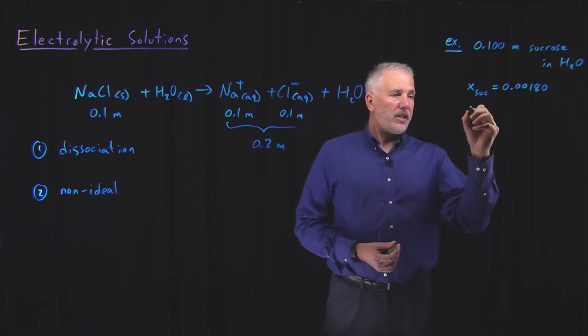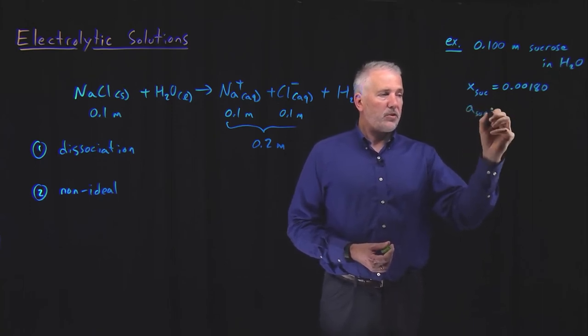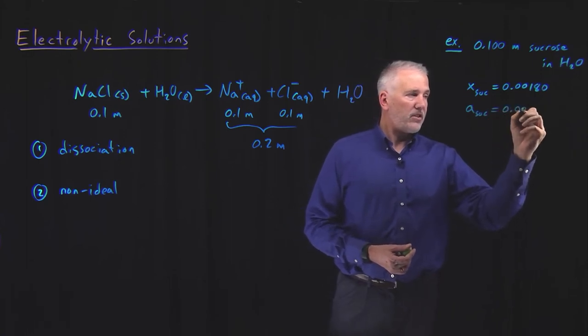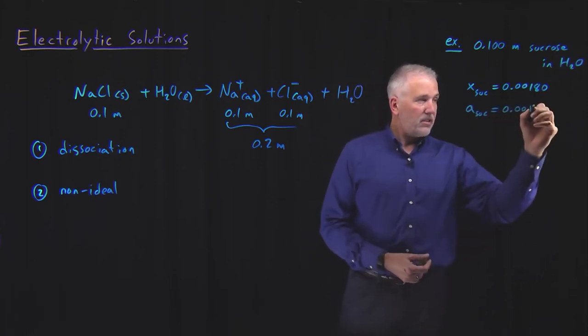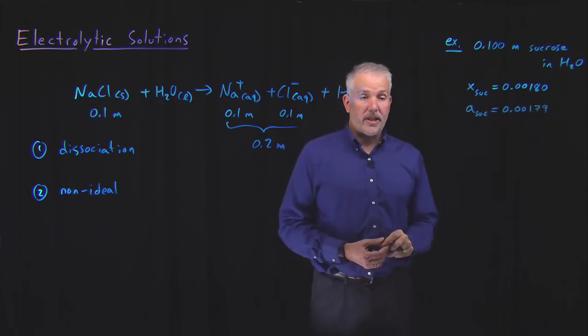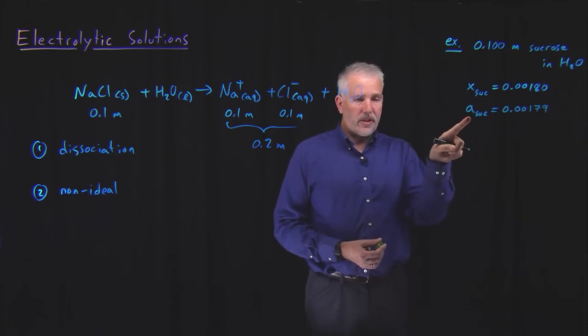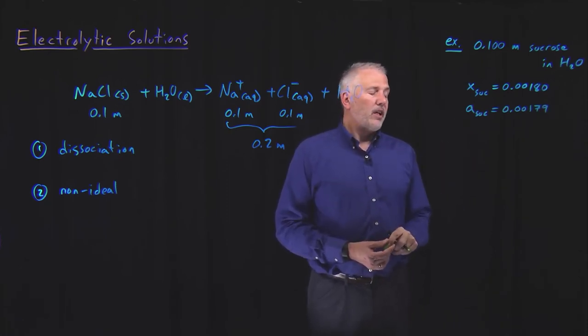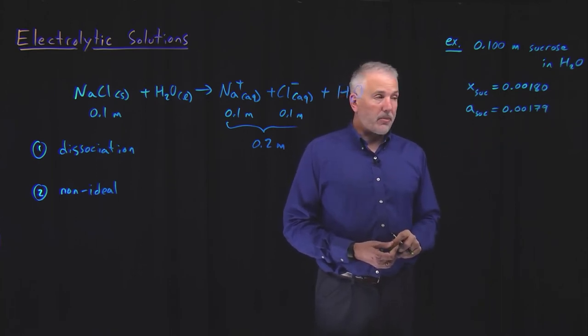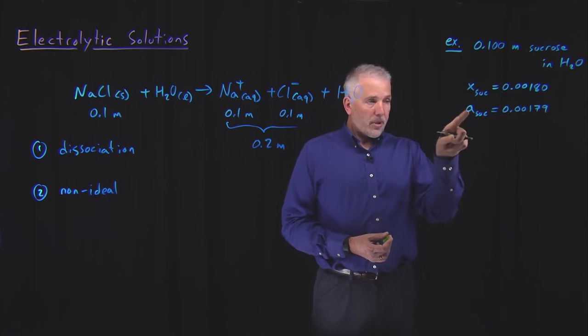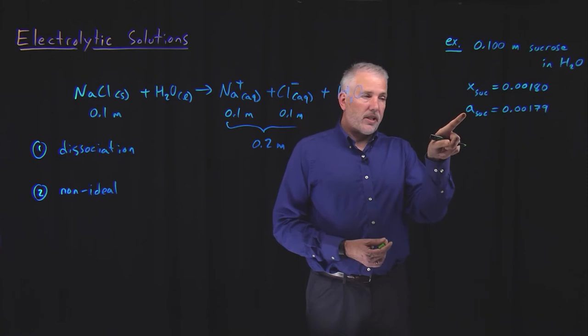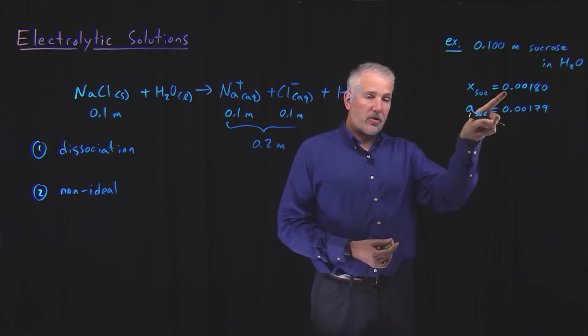If I were to measure the activity of the sucrose in that solution, it turns out the activity is pretty close to that value. So this is not that unideal a solution. The activity of sucrose in that solution is 0.00179. And that's not something we can compute or predict, at least at this point. That's just something that would have to be measured by, for example, measuring a colligative property and seeing what activity that gives us.